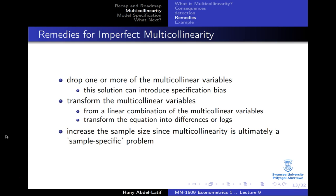To remedy imperfect multicollinearity, one way is to drop the variable causing it. However, you should be very careful because you might introduce another problem: specification bias. If that variable was important to your model — important to explain the change in your dependent variable — and you drop it, the impact of that variable will be absorbed into the error term, which will cause problems. We're going to talk about that in the next part of this lecture.